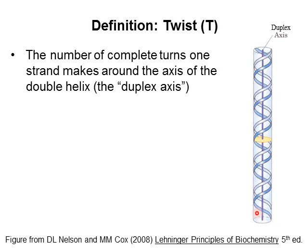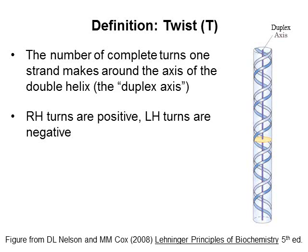Counting the revolutions: one, two, three, four, five, and about a half. By convention, right-handed twist is defined as positive, whereas left-handed twist is defined as negative. So because this is a right-handed double helix, the twist for this piece of DNA is plus 5.5.